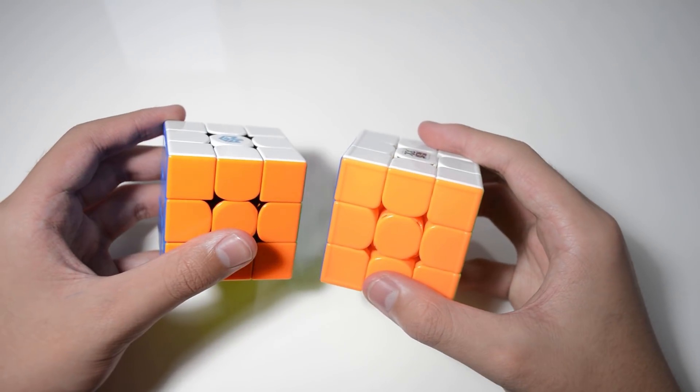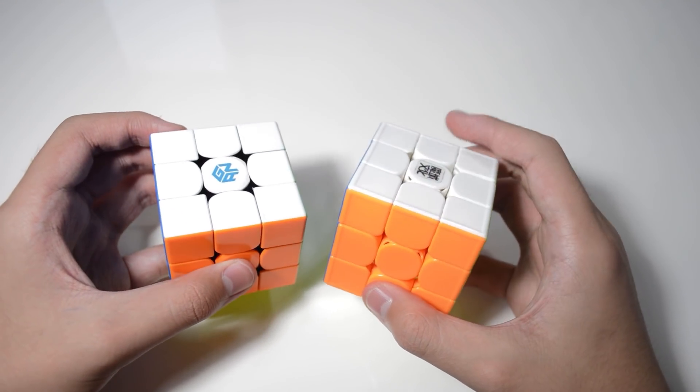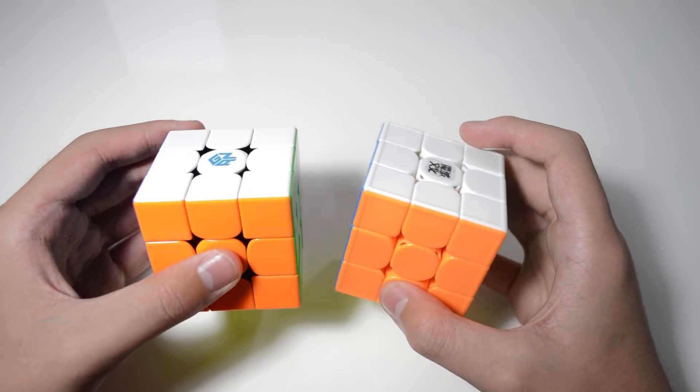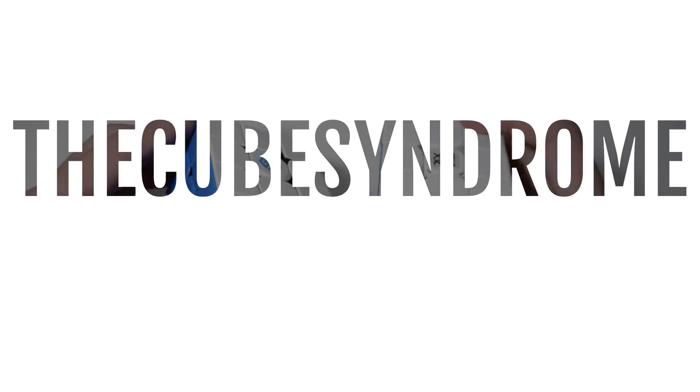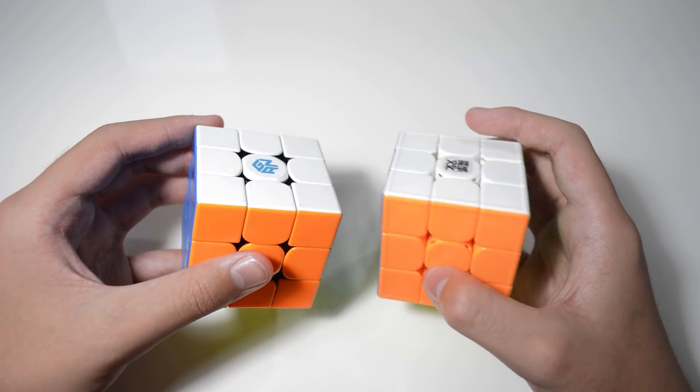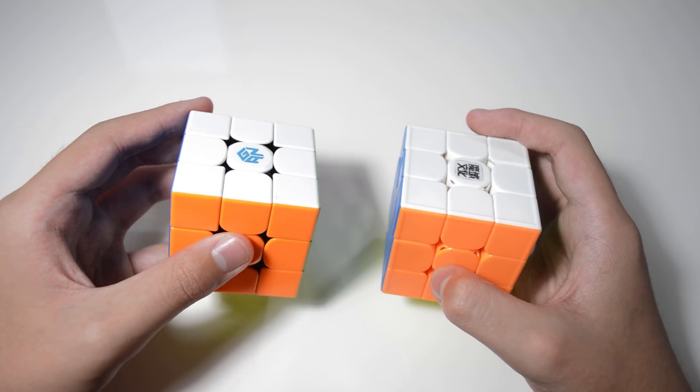So I've been getting a lot of requests for this video and I thought the cubologist had already made it, but it turns out that he actually compared the GAN 356X to the 354M. Hey guys, it's the Cube Syndrome here. Today I'll be making a comparison between the GAN 356X and the Weilong GTS-3M.